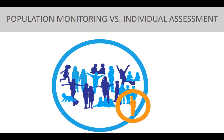HELP collects population-level data which is different from individual assessment data. Individual assessments — assessing one child — may lead to a report used by parents, schools, or clinicians toward a treatment plan or individual education plan. Whereas population-level monitoring — assessing populations of children — creates reports based on groups of children used by school districts, governments, and community partners to generate programs or make funding decisions for all children.